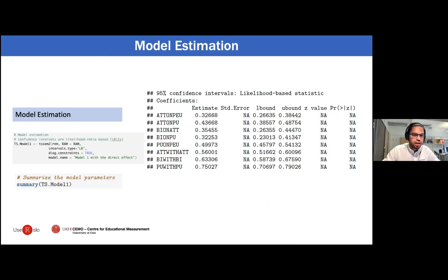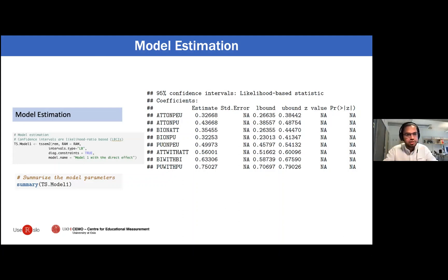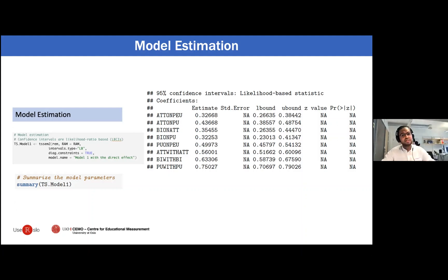After you have your SEM model specified, you can proceed to the second stage using the TSSEM2 function. Your input will be the object created from stage one and the RAM parameterization of your SEM model. You can also define the type of confidence intervals you want and specify again whether you have diagonal constraints on your random effects. As a result, you will obtain the parameter estimates of your SEM model and the 95% confidence intervals.